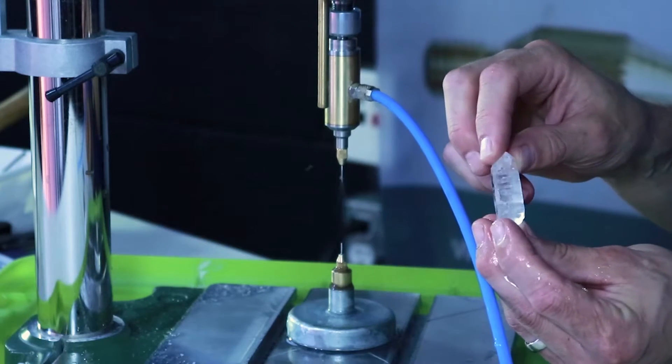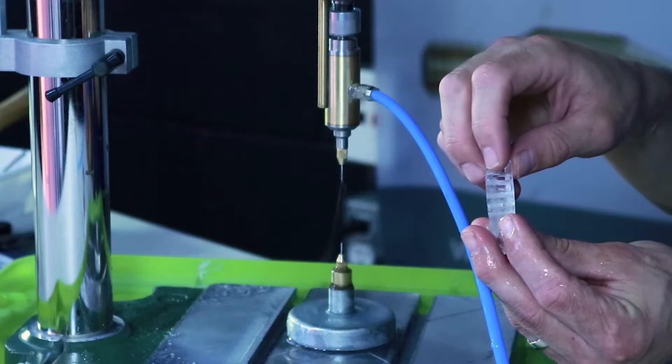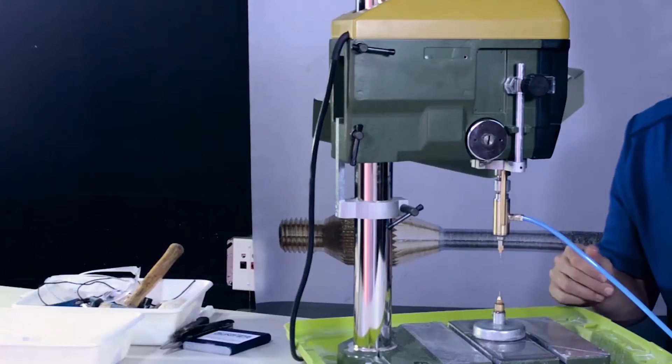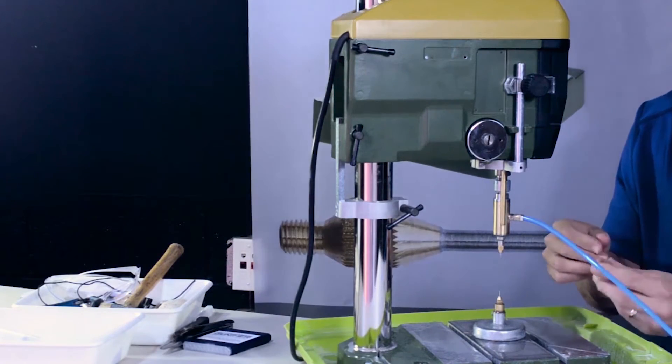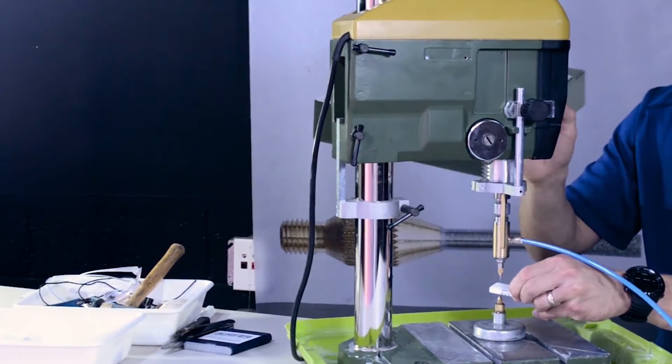There's a little tiny one millimeter hole through that crystal that you can see. Now we'll try this last agate again. I'm going to prep my drill bit.